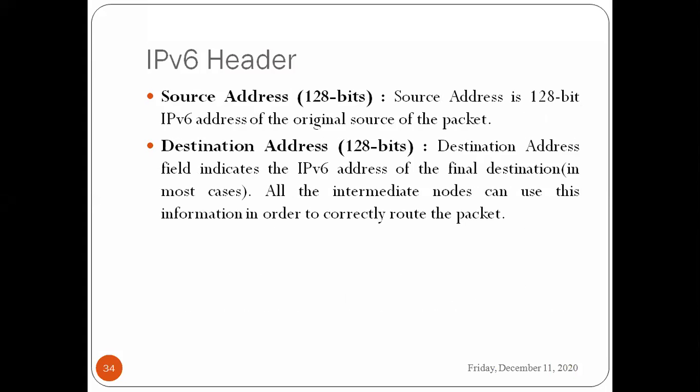The source address in IPv6 is 128 bits — it indicates the original source of the packet. The destination address is also 128 bits — it indicates the final destination. In most cases, all intermediate nodes use this information to correctly route the packets.